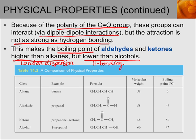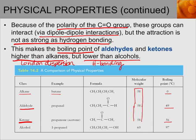A table comparing physical properties shows that the alkane butane has a boiling point of 0°C. An aldehyde with the same molecular weight of 58 has a boiling point of 49°C — much higher than the alkane, just due to those dipole-dipole interactions. A ketone with the same molecular weight has a boiling point of 56°C, a little higher than the aldehyde but much higher than the alkane.